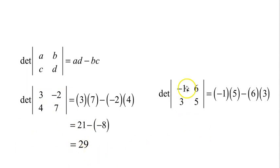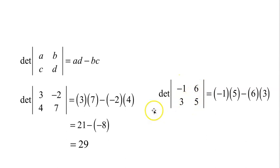If I have the determinant of [-1, 6; 3, 5], again you start in the upper left corner. Negative 1 times 5 is negative 5. 3 times 6 is 18. And we subtract: negative 5 minus 18, and we get our result of negative 23.